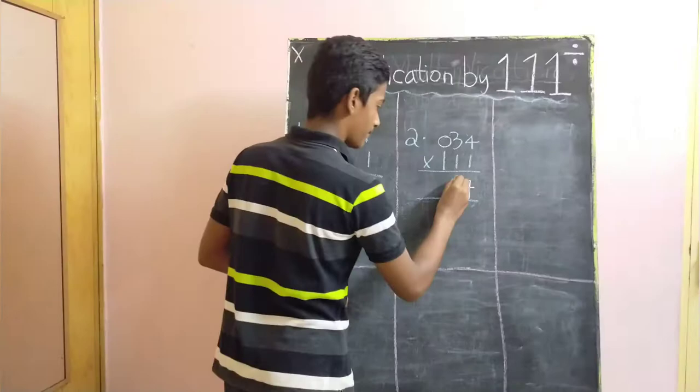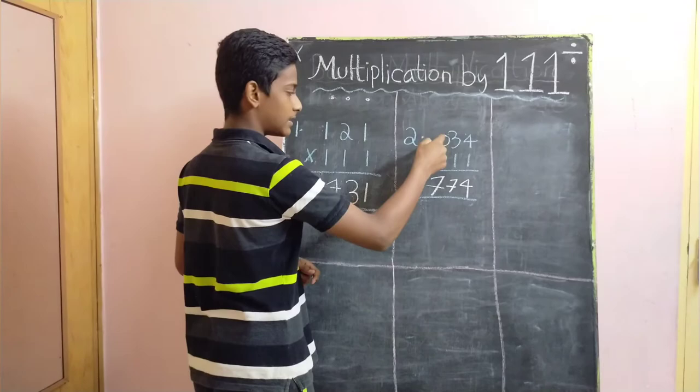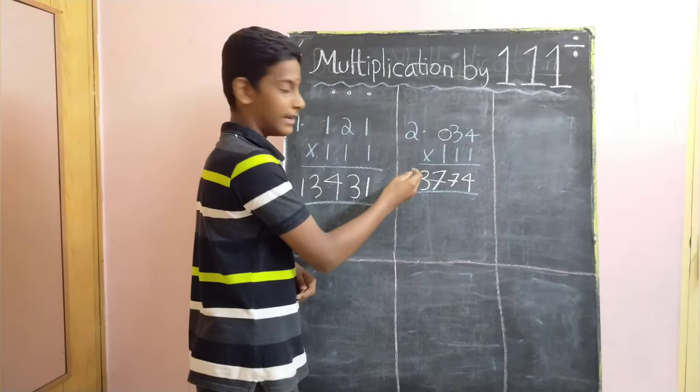Then 4 plus 3 plus 0 as there are 3 ones, which gives us again 7. Now, 3 plus 0 which gives us 3 and 0. Since 0 does not have any value, we need not to put 0 over here.